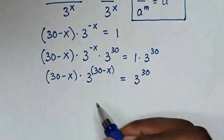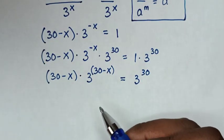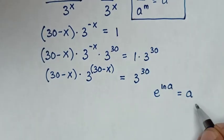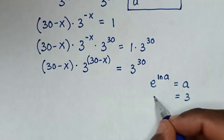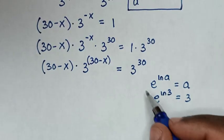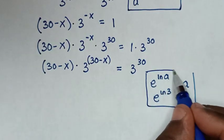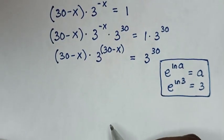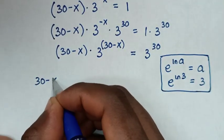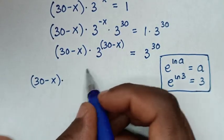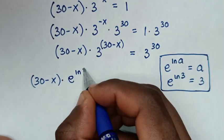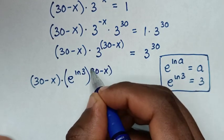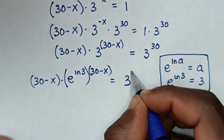Then in the next step, from this exponent with base of 3, we will apply the exponential rule that e power of ln a is equal to a. Then 3 will be equal to e power of ln 3. So I will substitute e power of ln 3 into this 3. Then our equation will be 30 minus x bracket times e power of ln 3, bracket power of 30 minus x, is equal to 3 power of 30.